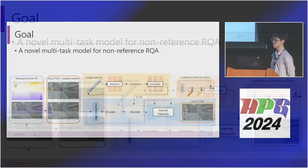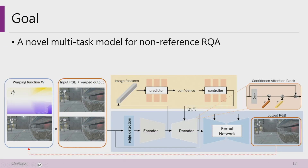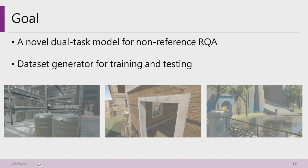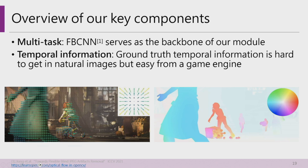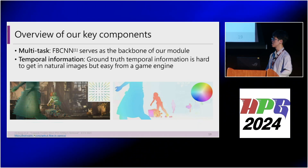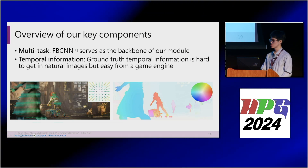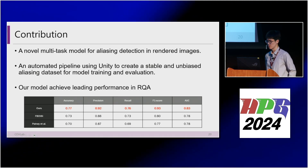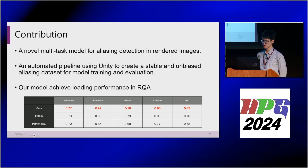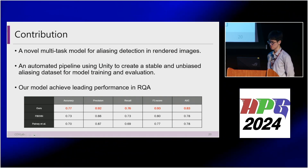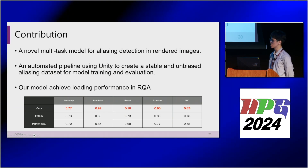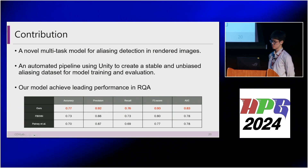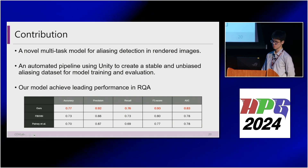Our goal is to design a multitask architecture for the non-reference RQA task, also called aliasing detection, and to design a dataset generation pipeline since no public dataset exists. Key insights include: first, a multitask architecture based on FBCNN; and second, incorporating temporal information through motion factor, which can be easily obtained from the rendering engine. Our method achieves better results than other baselines, as shown in the table.